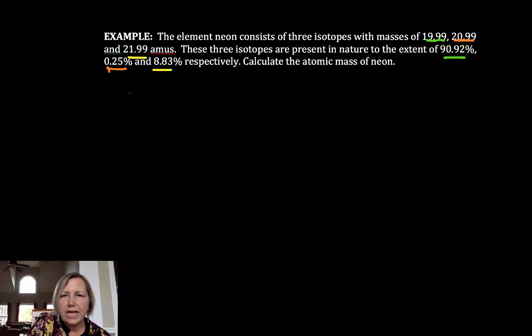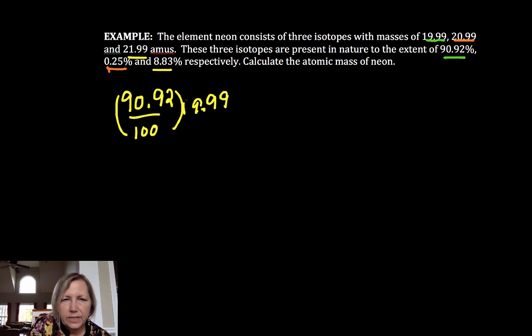So we're going to take fraction mass. So 90.92 over 100 times the mass number of 19.99. Can't quite see that number one there. Plus fraction mass, add.